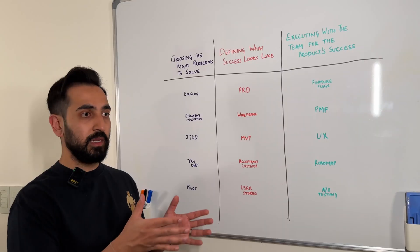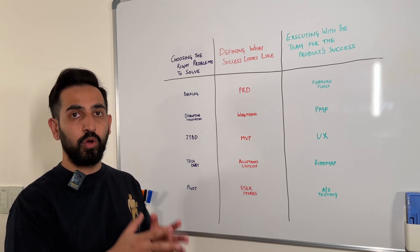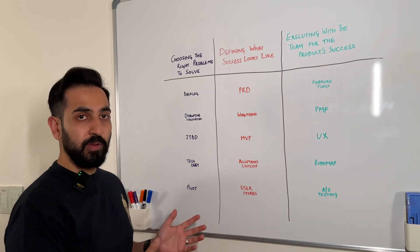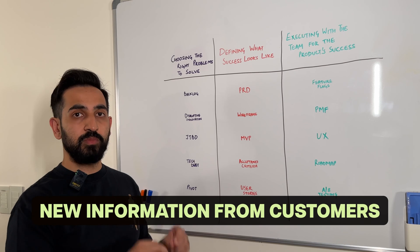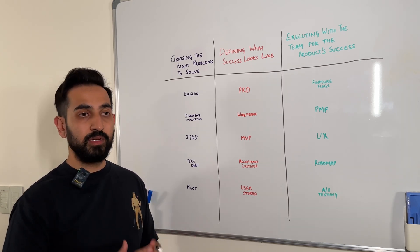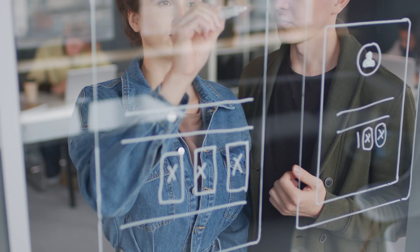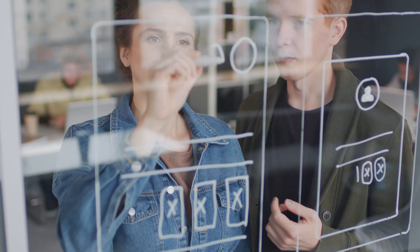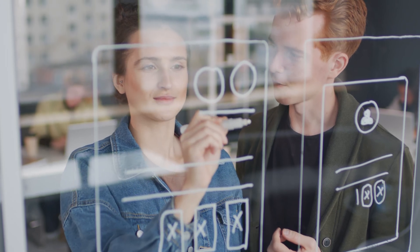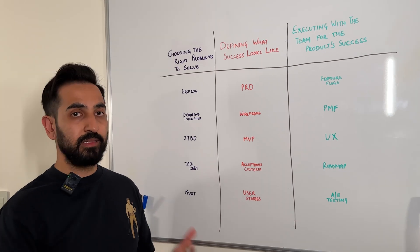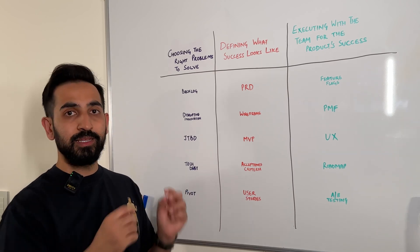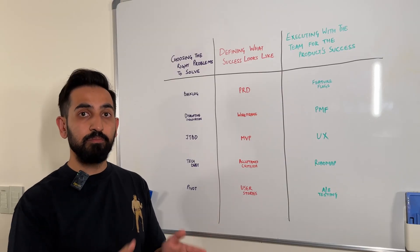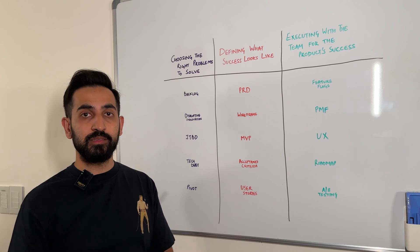A pivot is essentially a change in direction for a product based on new information or new customer trends in the marketplace. In product management, a pivot can involve shifting focus from a particular set of products and features to new ones because of new information from customers or new activity from competitors. Pivots are an important tool for product managers and startups because it enables them to keep changing direction based on the most up-to-date requirements they see in the market. Many companies like Spotify, Airbnb, Uber, and Amazon started and succeeded because they pivoted early to address the actual customer problems.